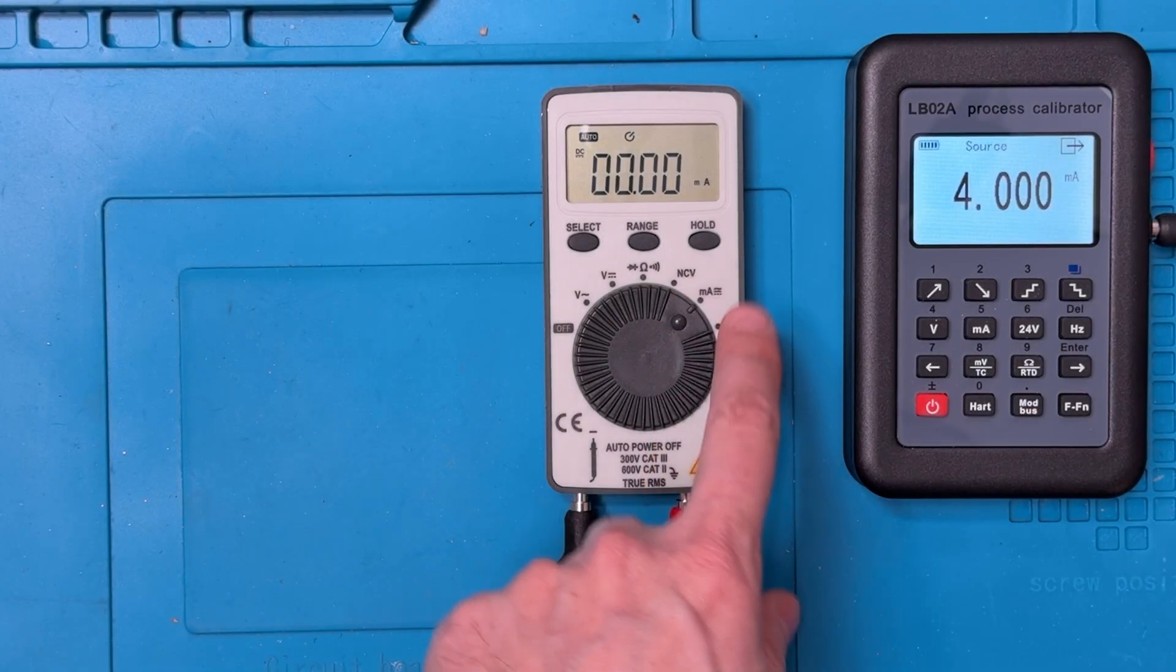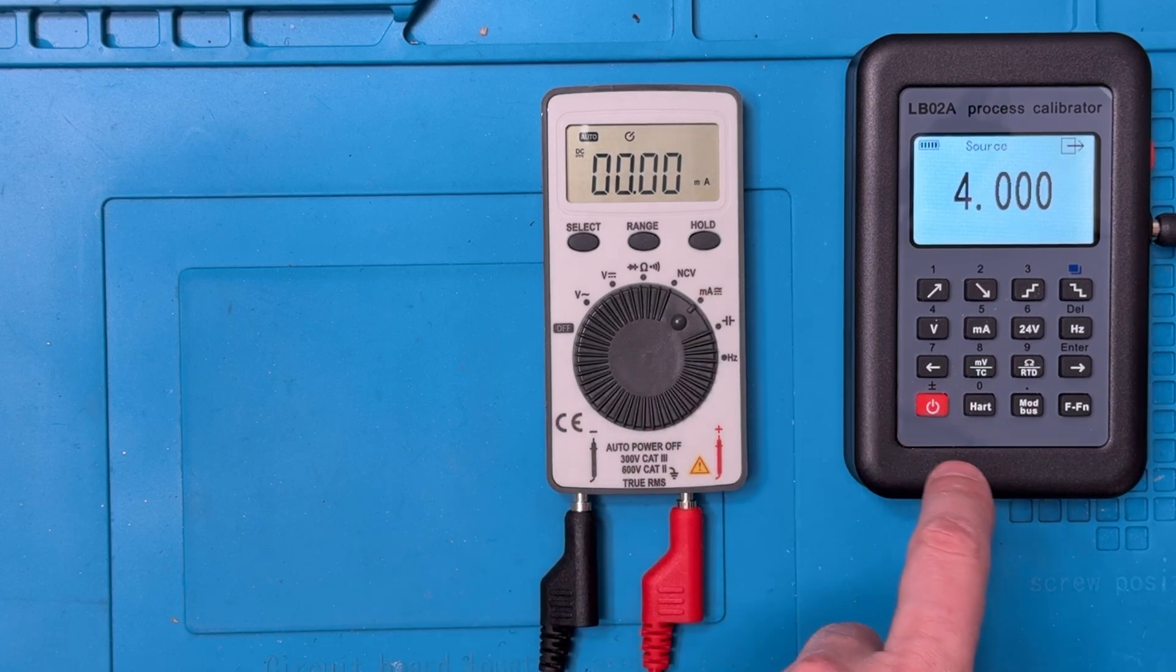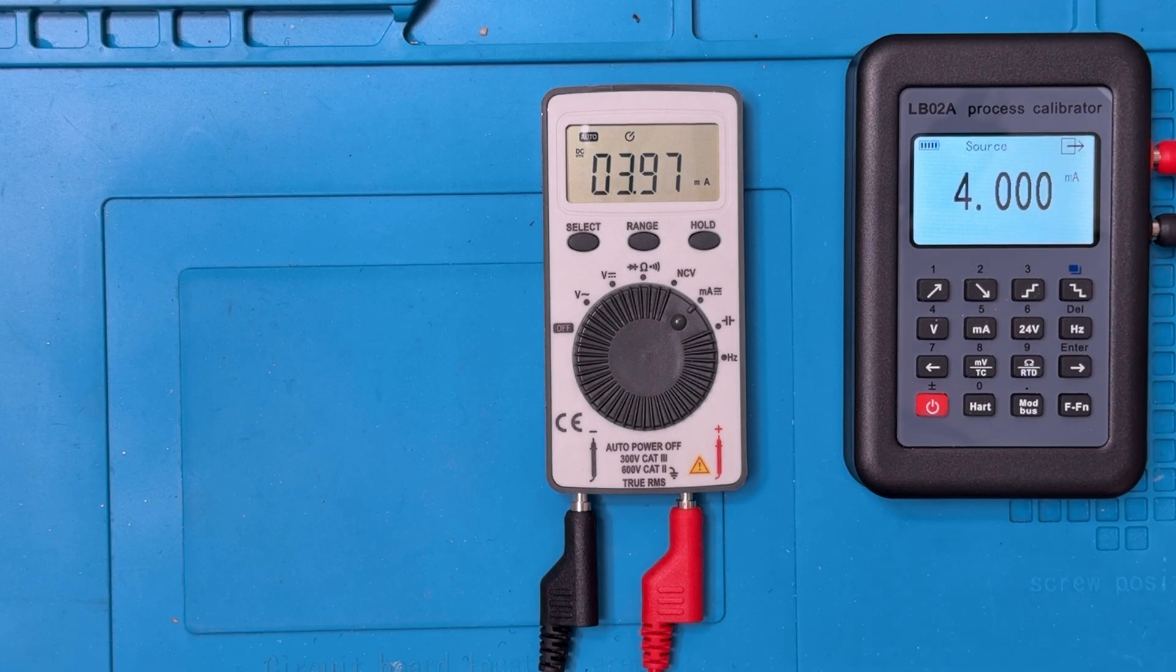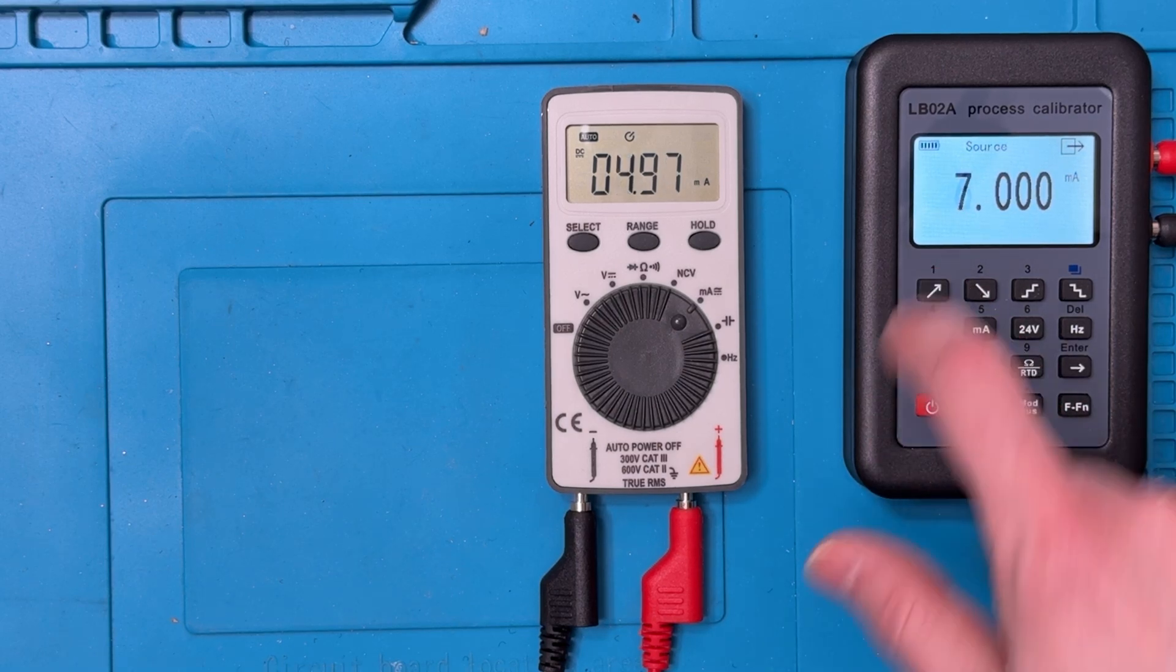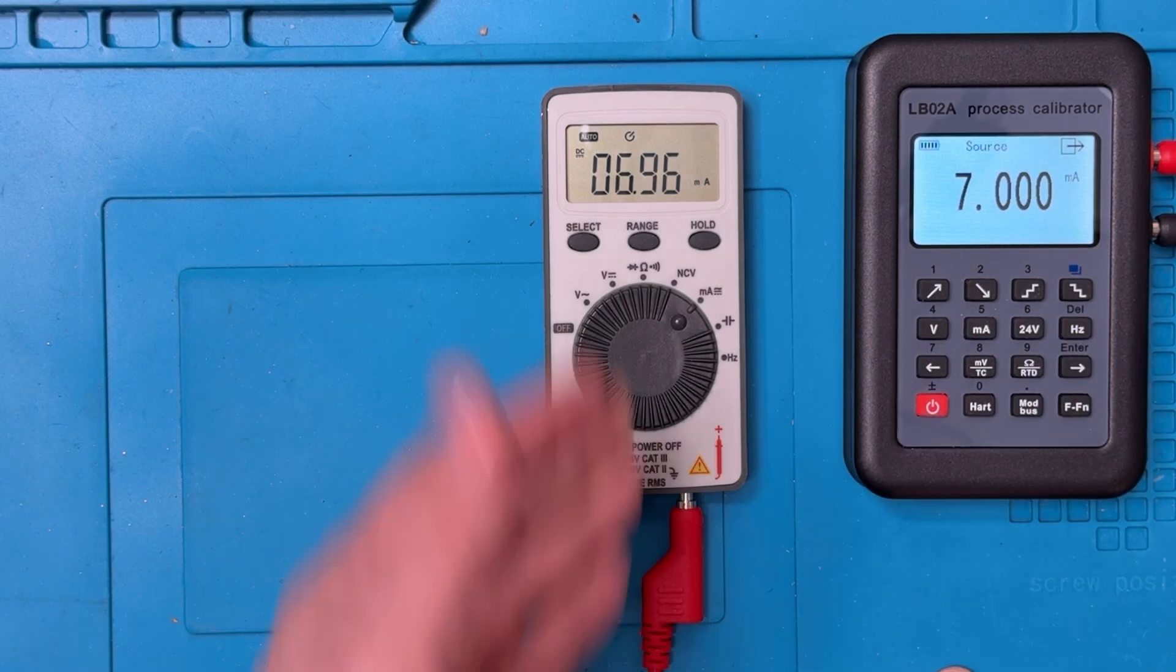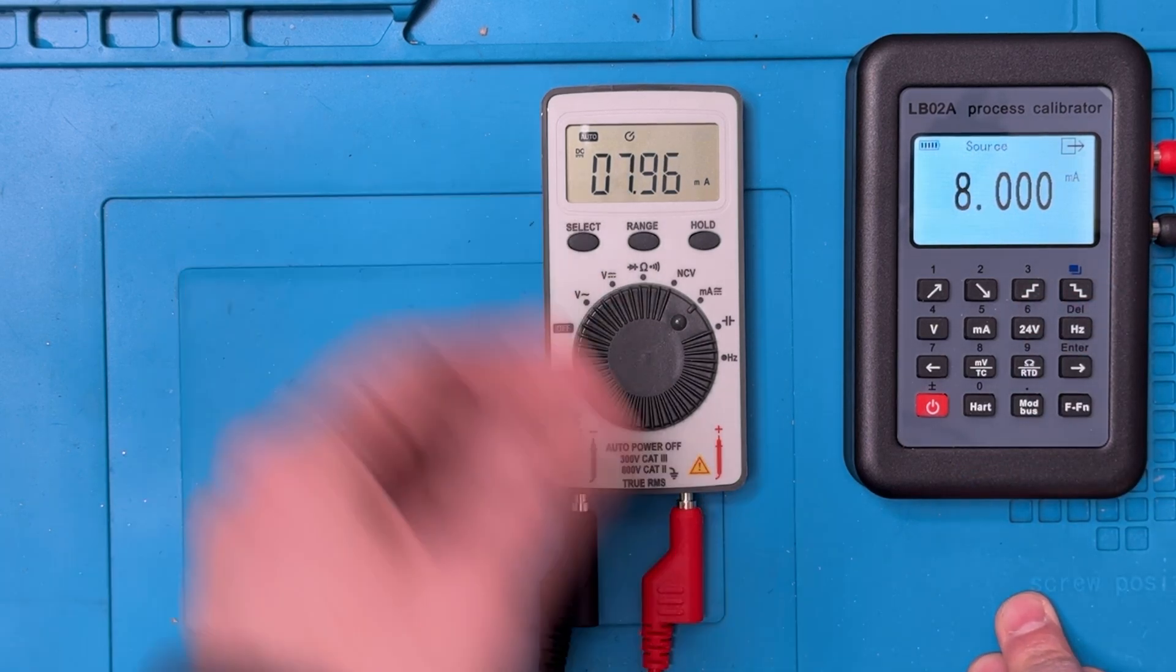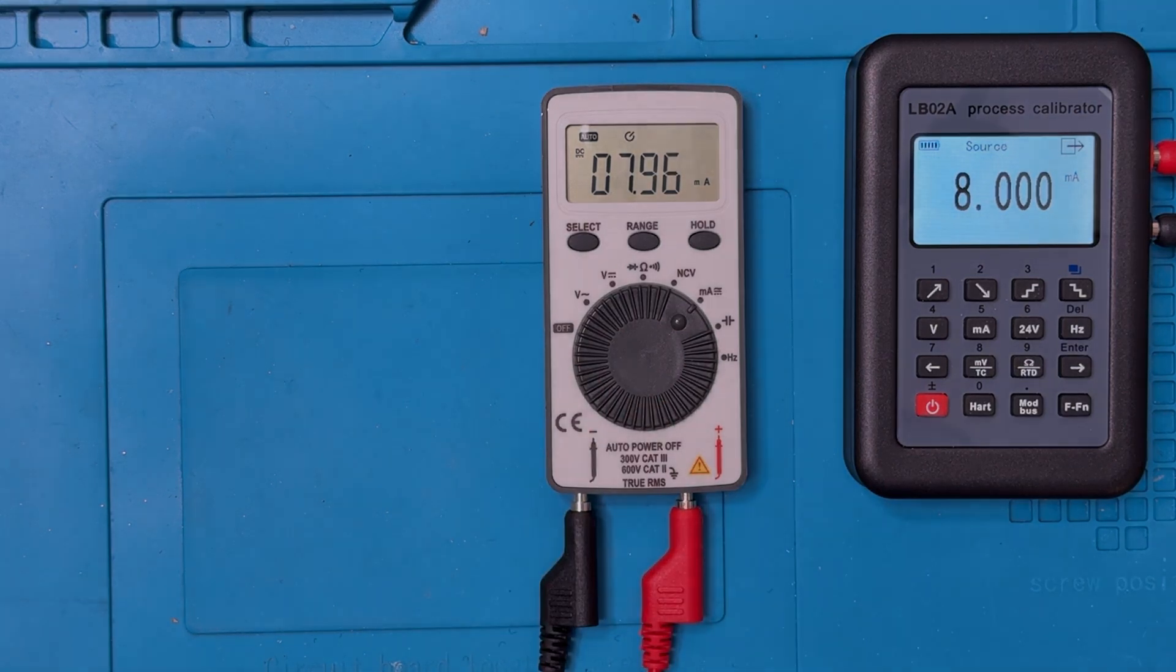DC milliamps, we can access that here on the multimeter. I'll now plug in the reference source. It's showing 4 milliamps. That's almost 4 milliamps. Dead on, that's very good. 7 milliamps, still very good. 8 milliamps, very good reading. So I think that's really nice performance in the milliamp range.